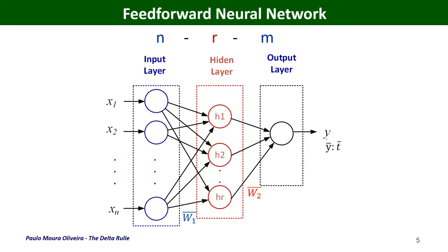We are going to introduce the configuration of a feedforward neural network, where the first layer is called the input layer. In this case we have N neurons for the input layer. Then we have the hidden layer, which has R neurons. And then we have the output layer, which in this case is just a single output.